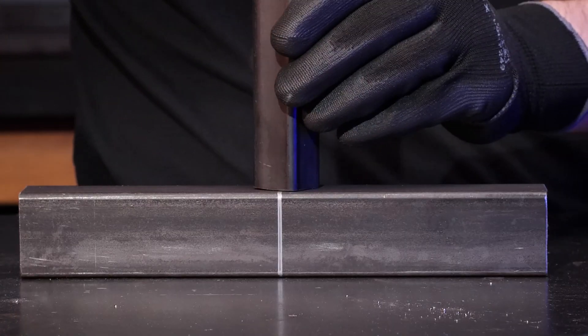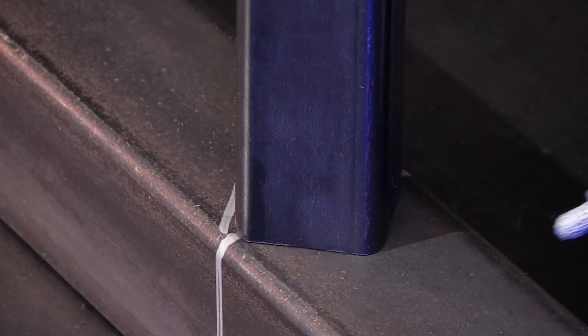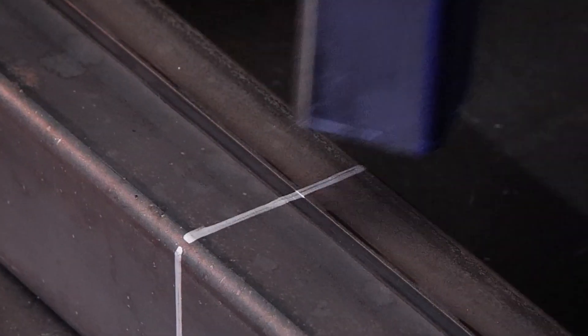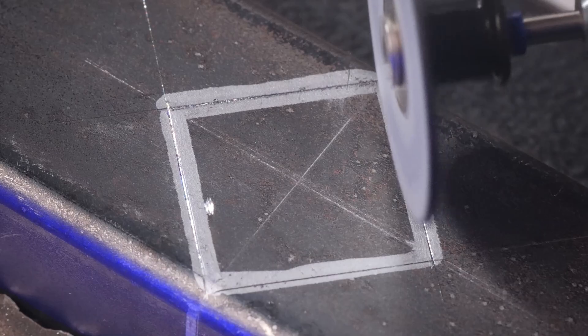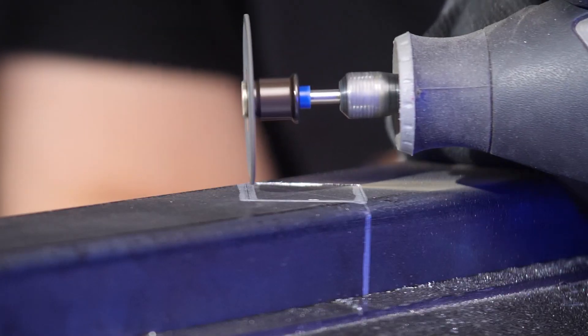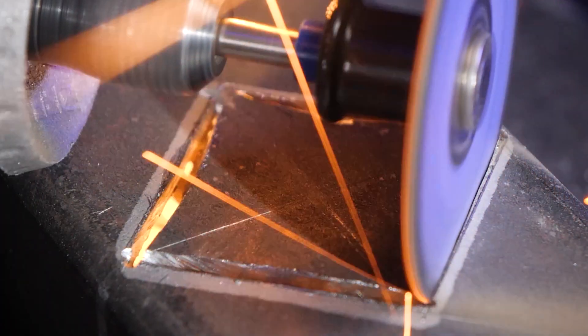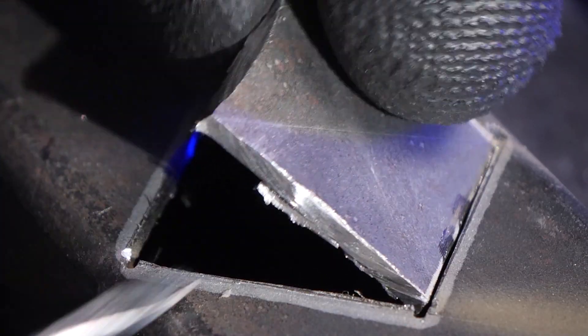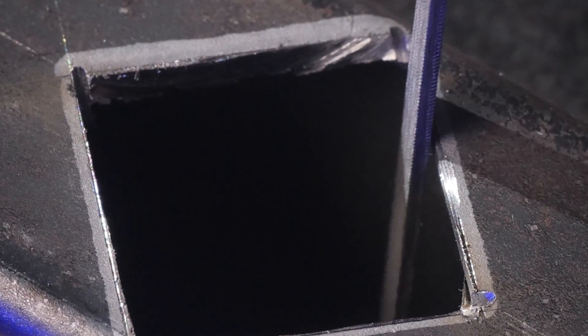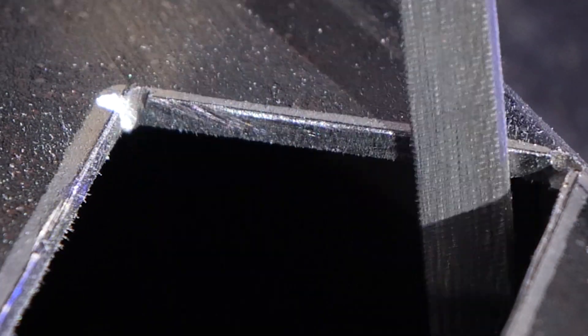Ever thought about marking dimensions directly onto a metal pipe and cutting into it? It's surprisingly effective. Just remember to smooth out those edges and solder the pieces together for a secure fit.